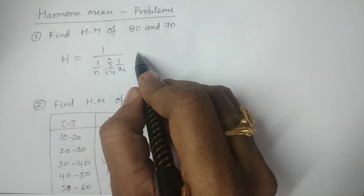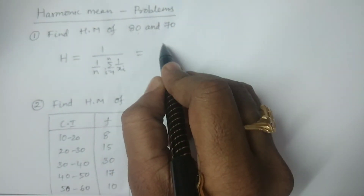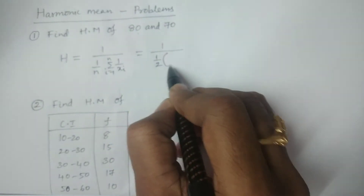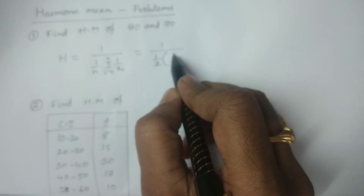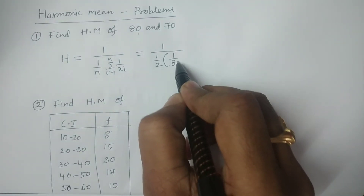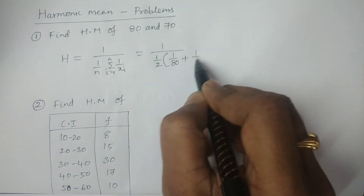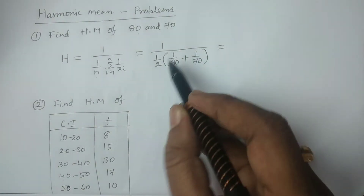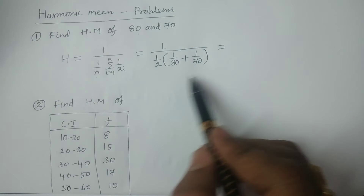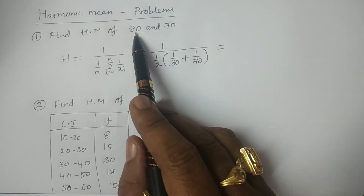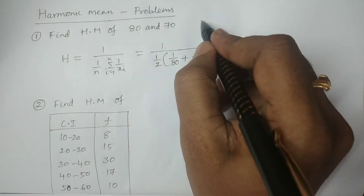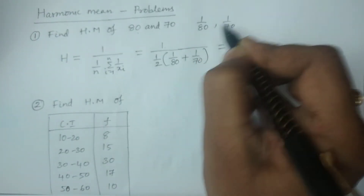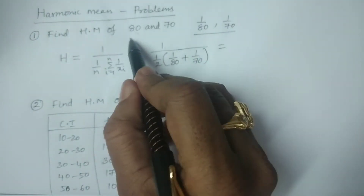H is the harmonic mean. In this problem we have two observations, so: H = 1 / (1/2 × (1/80 + 1/70)). The reciprocals of 80 and 70 are 1/80 and 1/70.